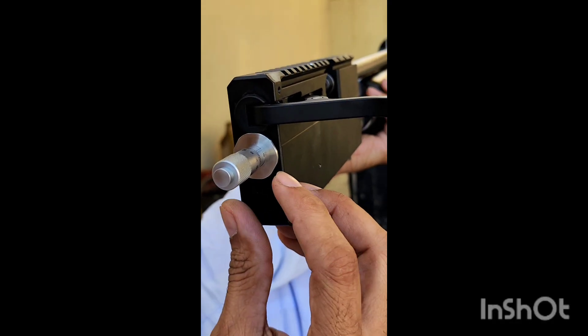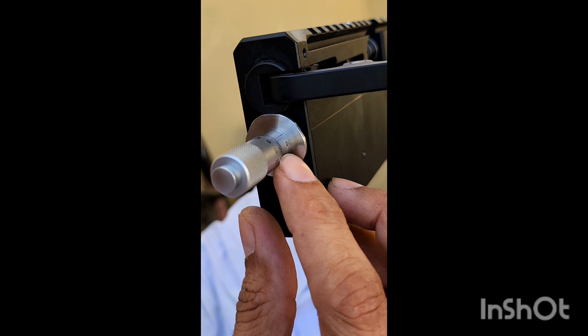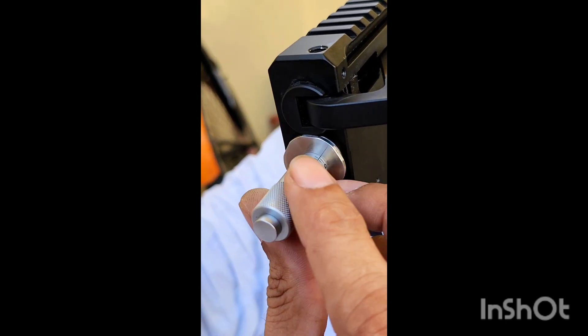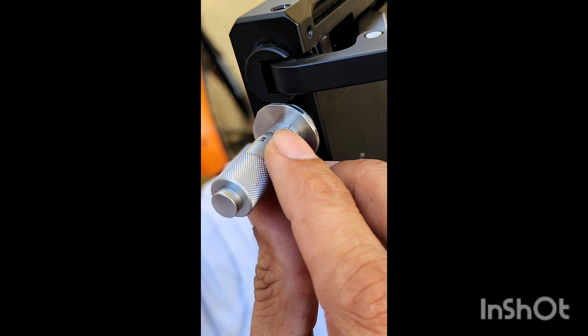This is the micrometer installed with SSG. Now you can see it's zero on zero reading. Let's start from here.